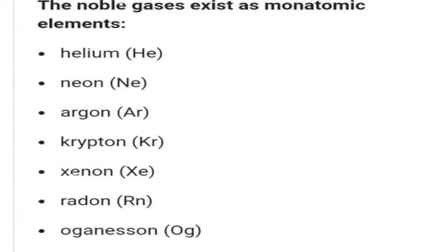Monatomic molecules are those which have only one atom. Molecules having one atom in their molecule are called monatomic molecules. All the noble gases exist in monatomic form because their octet is complete.